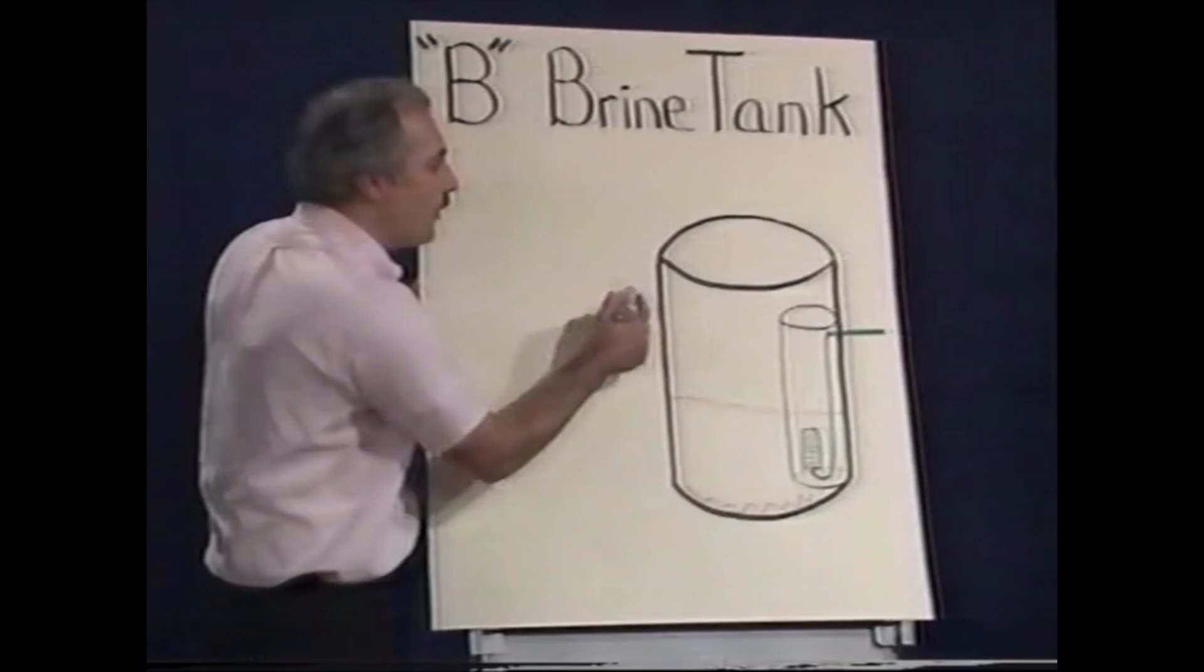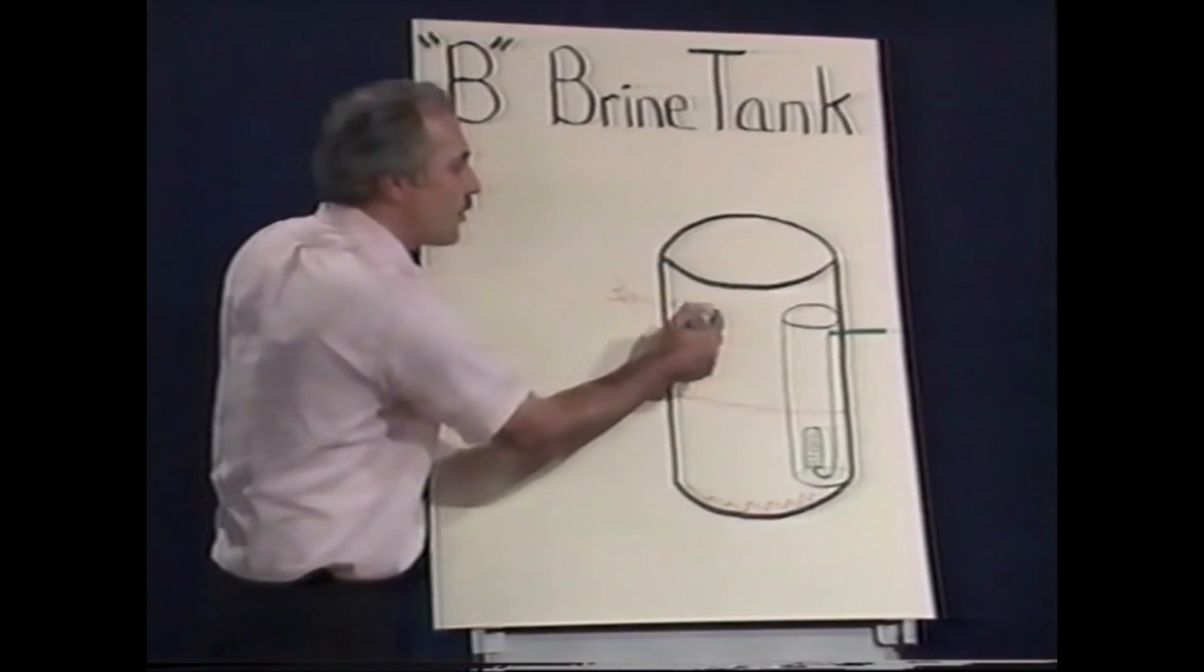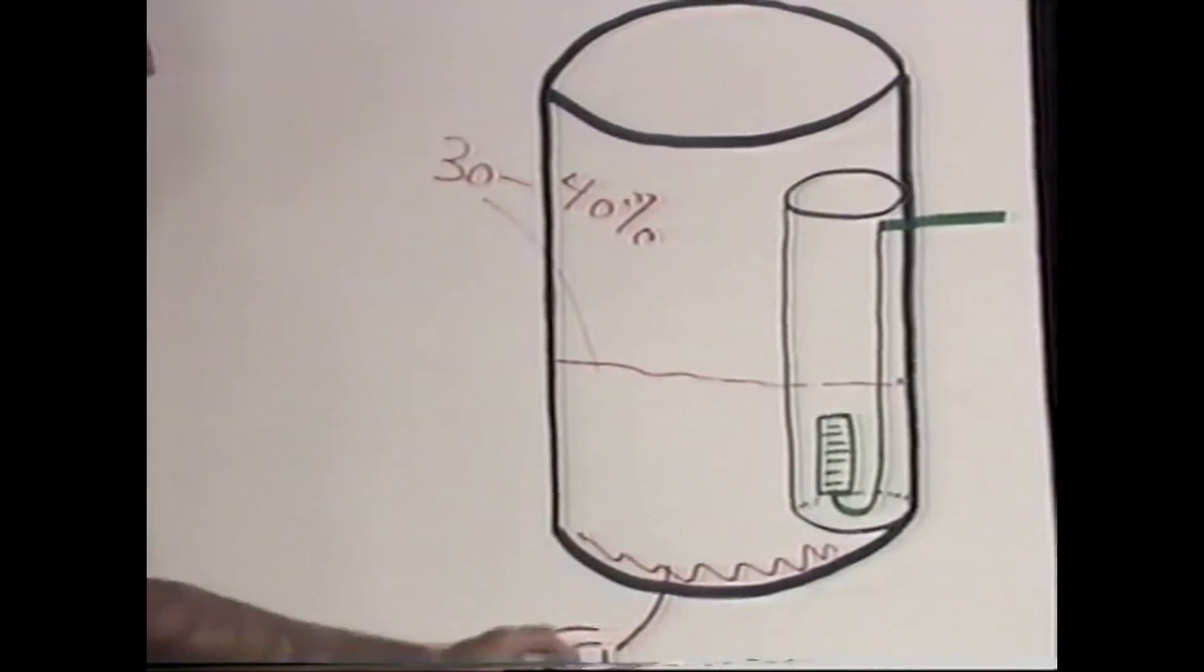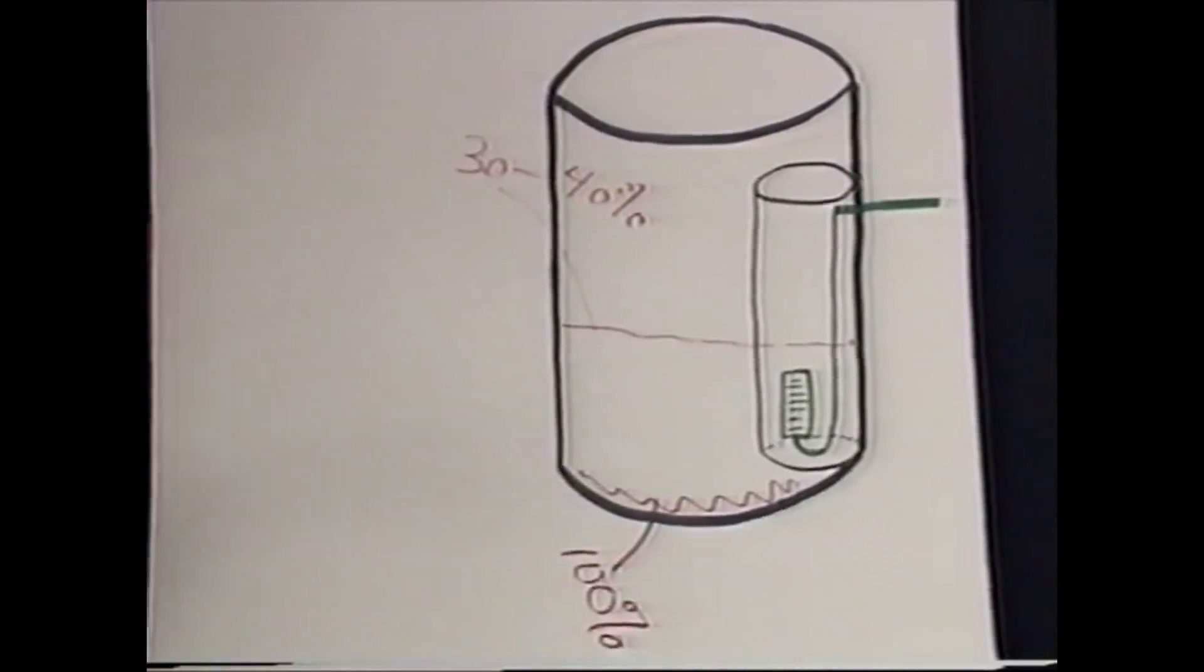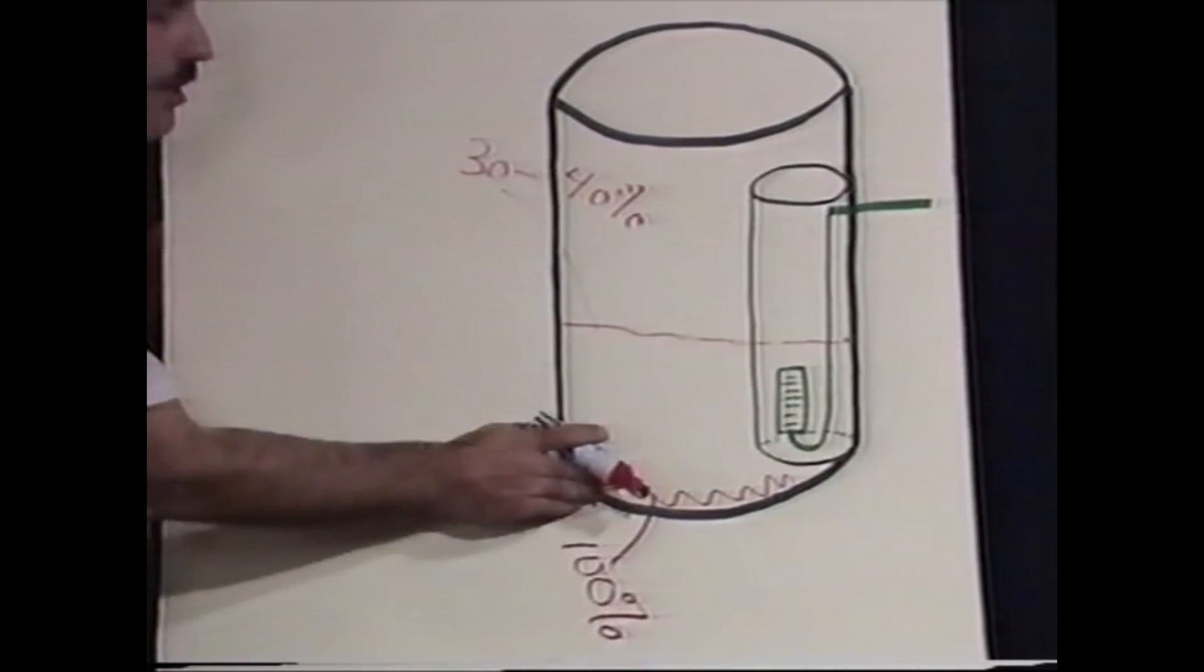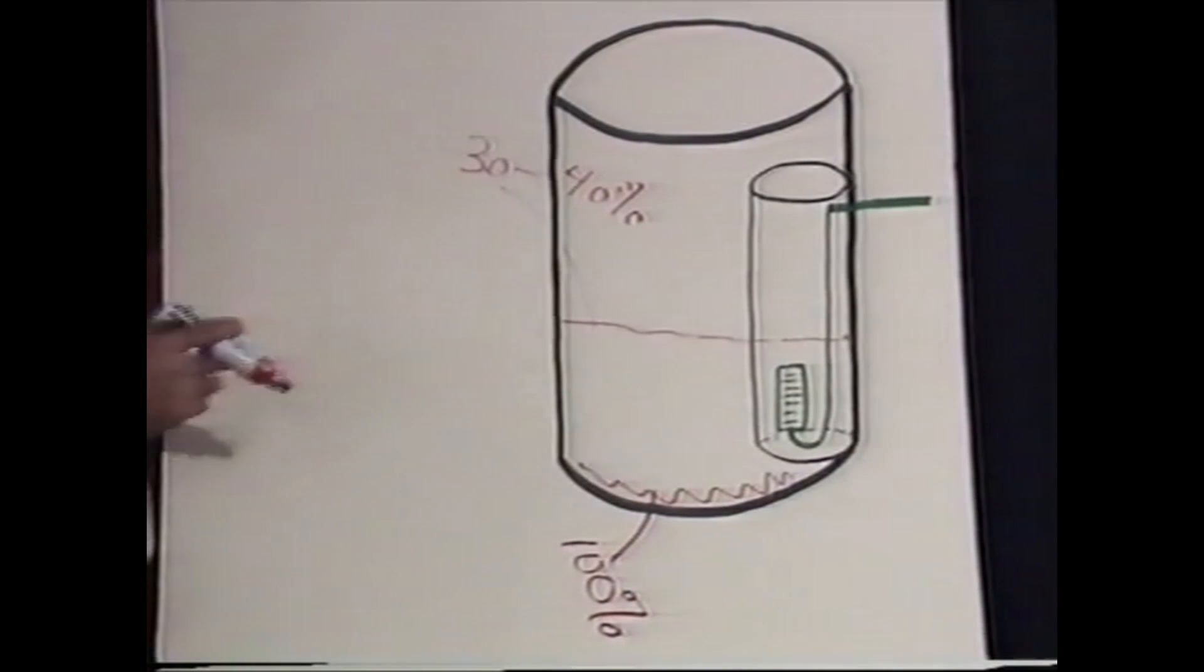If you siphon it right off the bottom, you have 100% concentrated brine. You're basing all your regeneration capacities on 100% brine. That salt level has to be above the water level.